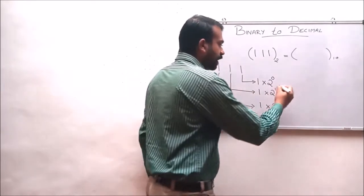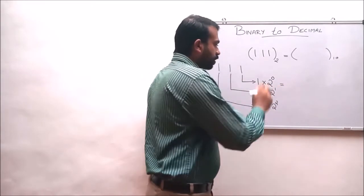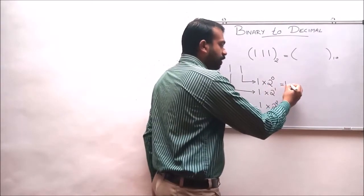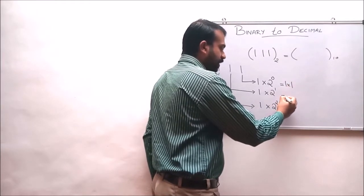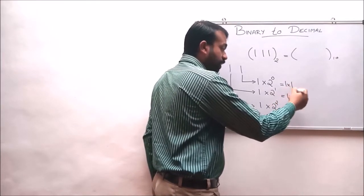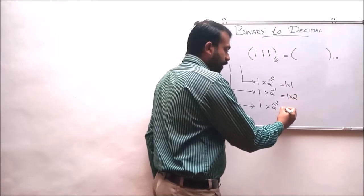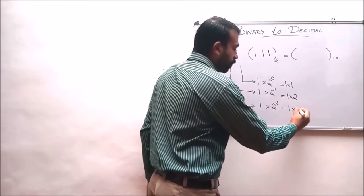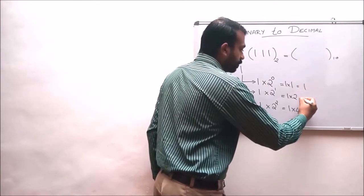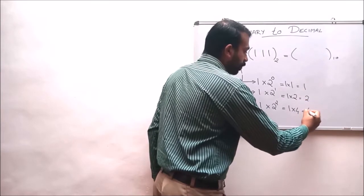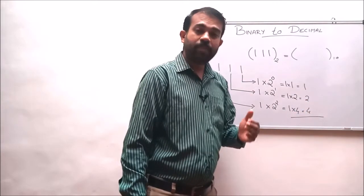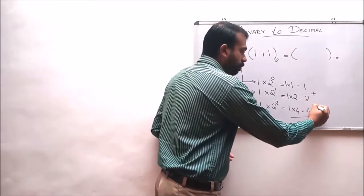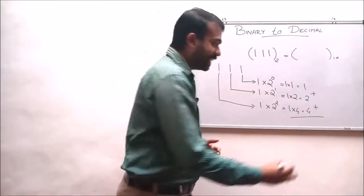While multiplying: 2 raised to 0 is 1, so 1 multiplied by 1 is 1. For the second digit, 1 multiplied by 2 raised to 1 is 2. For the third digit, 1 multiplied by 2 raised to 2 — and 2 raised to 2 is 4. So the results are 1, 2, and 4. The final answer is 1 plus 2 plus 4, which equals 7.